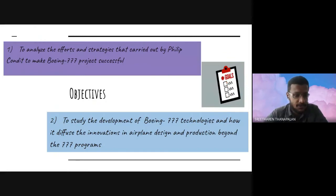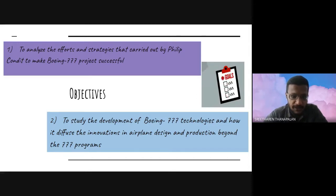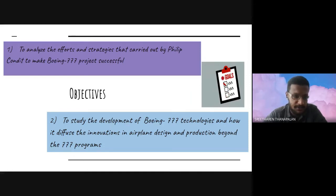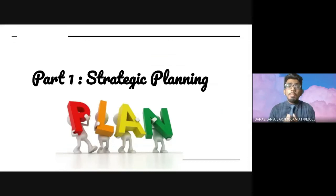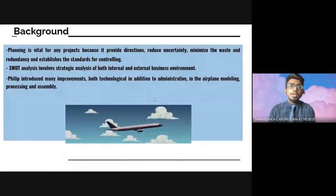There are two objectives. First is to analyze the efforts and strategy carried out by Philip Condit to make the Boeing 777 project successful. The second objective is to study the development of Boeing 777 technology and how to diffuse the innovation in aircraft design and production beyond the 777 program.